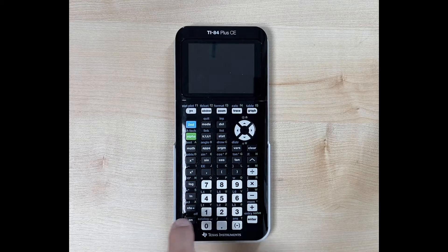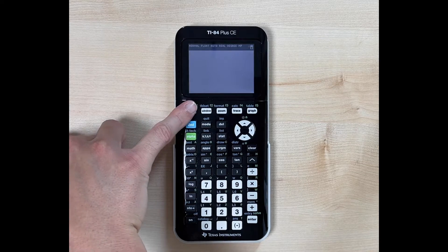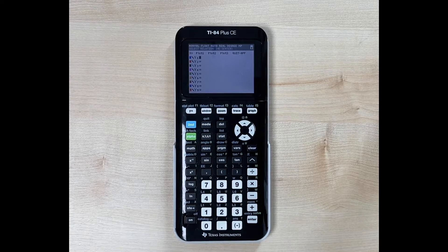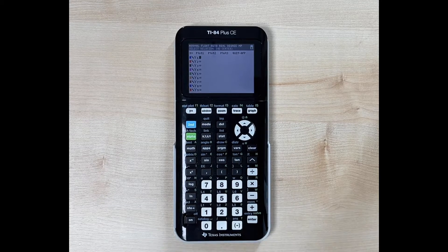We're going to go ahead and turn it on and we want to go to y equals. So we know that to graph a vertical line, the equation says x equals a number, right?